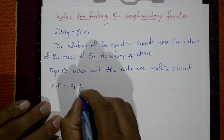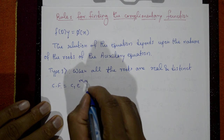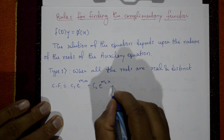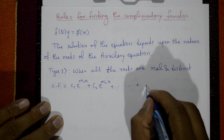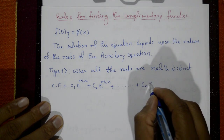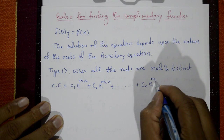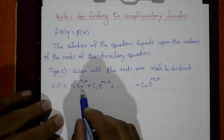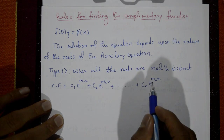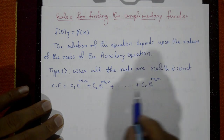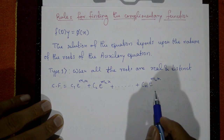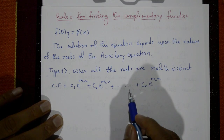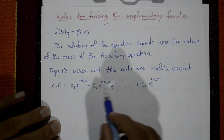The complementary function is c1·e^(m1·x) + c2·e^(m2·x) + ... + cn·e^(mn·x). Here m1, m2, m3 are all different roots, and c1, c2, c3, ..., cn are arbitrary constants.